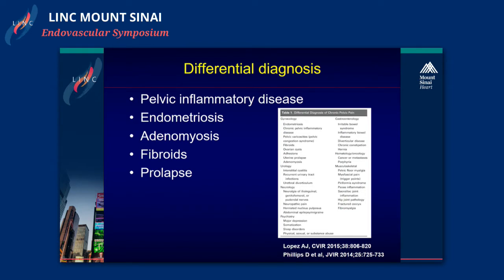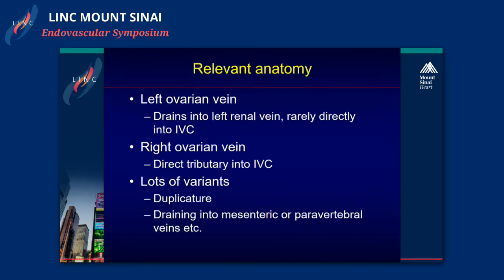Differential diagnosis is a long list, but you should exclude at least pelvic inflammatory disease, endometriosis, adenomyosis, fibroids, or prolapse. But as you can see from the table on the right-hand side, there is a long list of diseases that needs to be excluded.